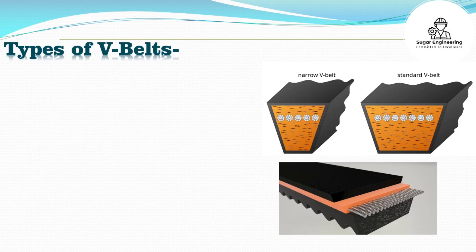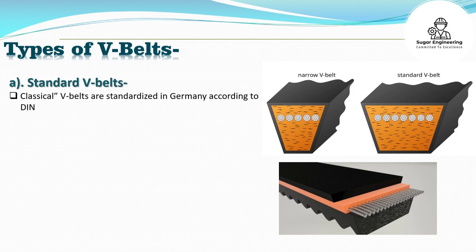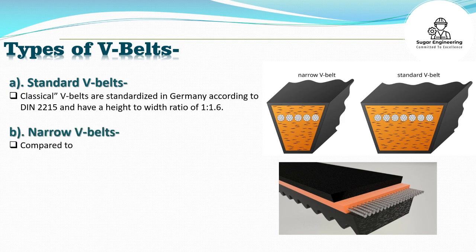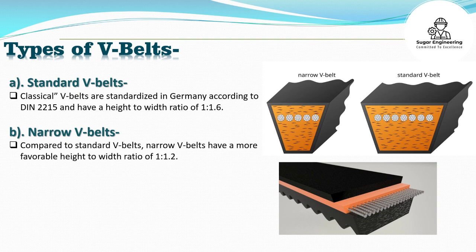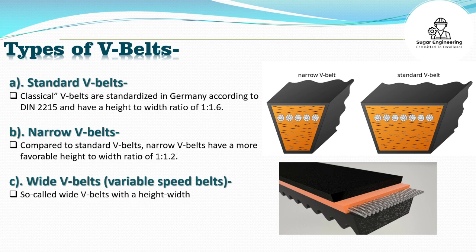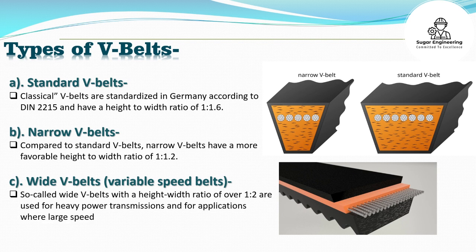Types of V-belts: A. Standard V-belts — Classical V-belts are standardized in Germany according to DIN 2215 and have a height-to-width ratio of 1 to 1.6. B. Narrow V-belts — Compared to standard V-belts, narrow V-belts have a more favorable height-to-width ratio of 1 to 1.2. C. Wide V-belts (Variable speed belts) — So-called wide V-belts with a height-to-width ratio of over 1 to 2 are used for heavy power transmissions and for applications where large speed changes occur.